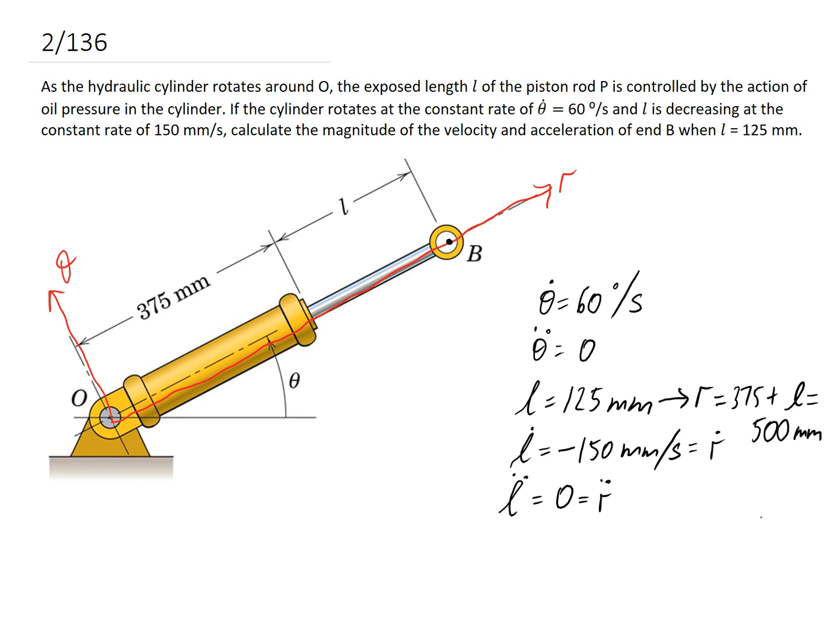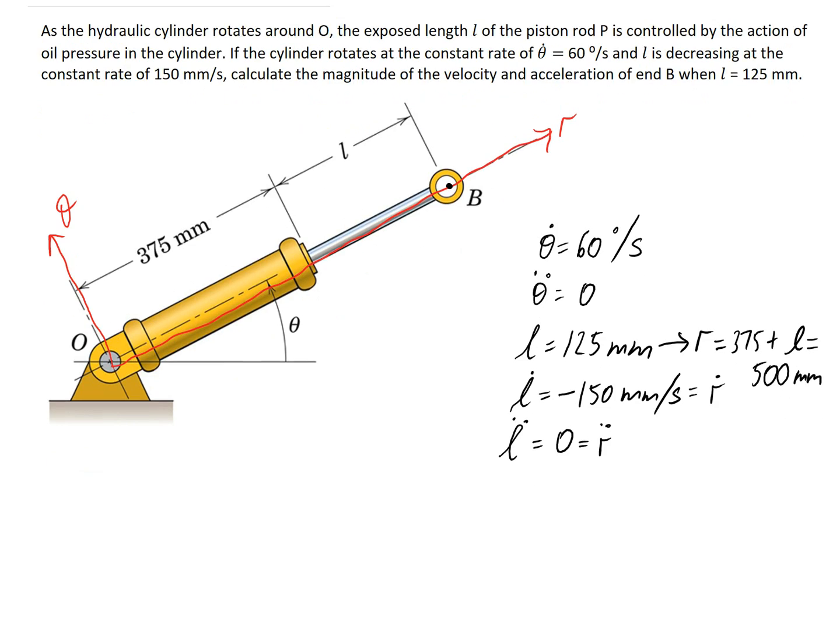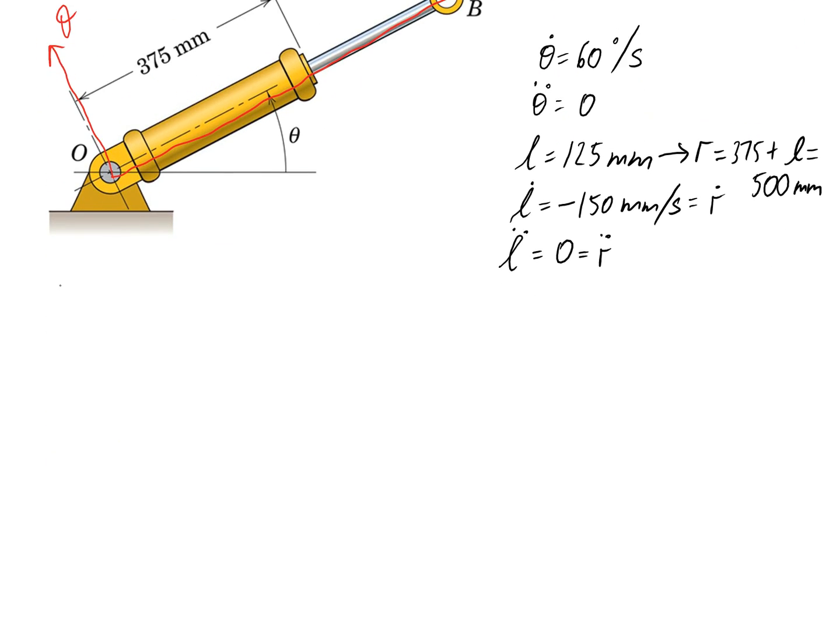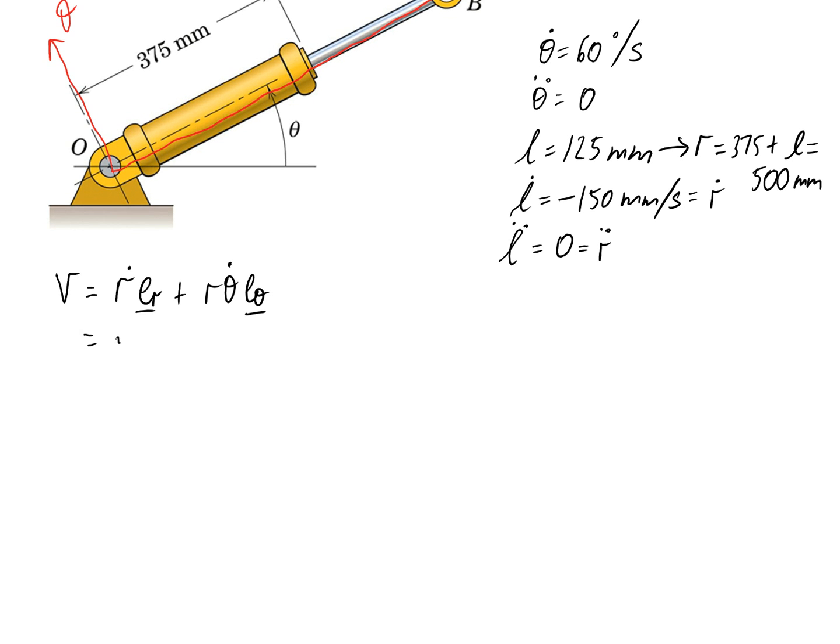So now we can go ahead and use our equations in polar form for velocity and acceleration. So I'll just scroll it down slightly. So the velocity is equal to R dot E R plus R theta dot E theta. So we're able to just substitute straight in. So we know that R dot is negative 150. R is equal to 500. And theta dot is equal to 60 degrees per second. Now this needs to be converted into radians, because radians are the natural numbers. Degrees are not. If you don't convert it into radians, you're going to get an odd answer that's not right.